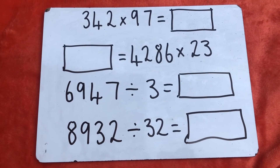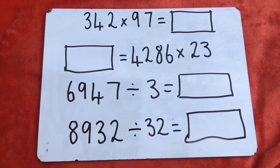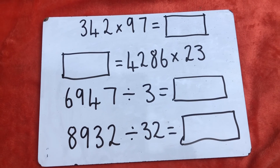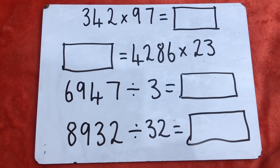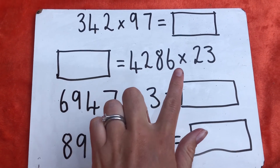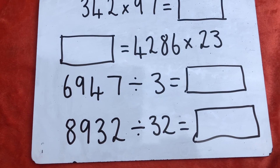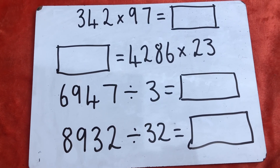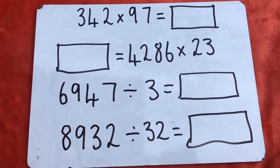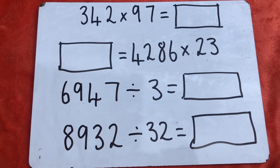Now pause the video and have a little practice at these questions. 342 multiplied by 97 — you'll really need your 9 and 7 times tables for that, or use a multiplication square to help. For the next one, work it out in exactly the same way — don't get tricked by the missing number box being on a different side. Remember, it's saying whatever's on one side equals whatever's on the other. So 4,286 multiplied by 23 — use the long multiplication method and put your answer in the box. Then there's a short division question: 6,947 divided by 3. And finally long division: 8,932 divided by 32. Don't panic — step 1, write out all your multiples of 32, then go back and watch the long division section if you need to.